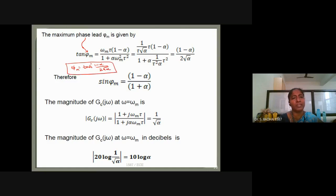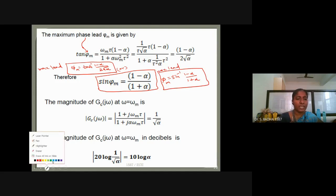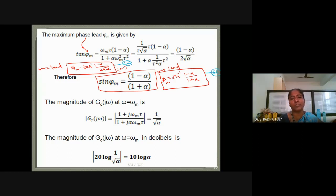This is the formula for maximum lead in a lead compensator. Another formula is: φm = sin inverse of (1 − α)/(1 + α). Maximum lead can be expressed in two ways — these are equation 6a and 6b. Both equations represent the maximum lead only.